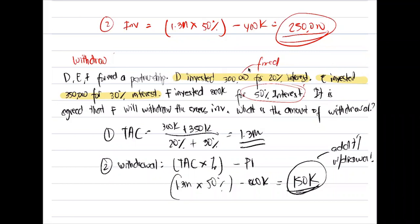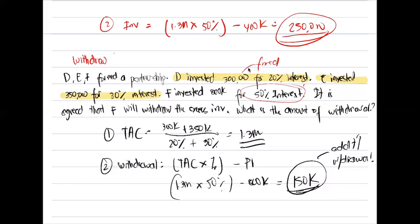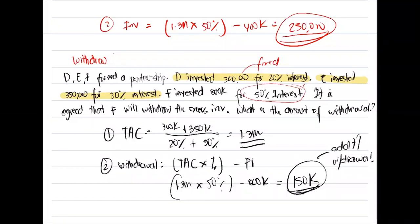That wraps up our session on partnership formation. We learned how to account for partnership formation using the net investment method and the bonus method, whether partners are purely individuals, businesses, or a combination. We also covered how to compute the amount of additional investment or withdrawal using the total agreed capital formula. Remember the rules on valuing contributions for individuals and for sole proprietorship businesses.